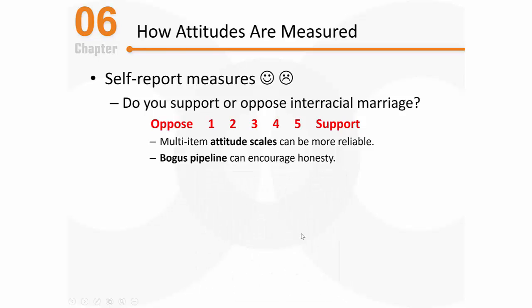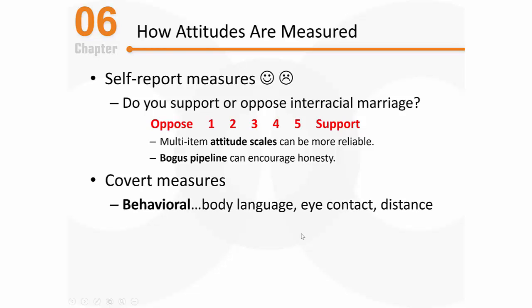If self-report measures are very straightforward, then covert measures are really the opposite. When we use covert measures, we're trying to assess people's attitudes without them really knowing — we're certainly not going to ask them straight out what their attitude is. So how might we collect data covertly? Let me give you a couple of examples.